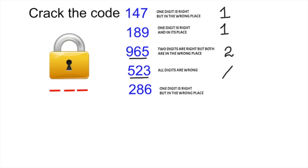523, all are wrong, so nothing is correct. 286, one digit is right. We will start from the digits which are all wrong. So let's write all the numbers.